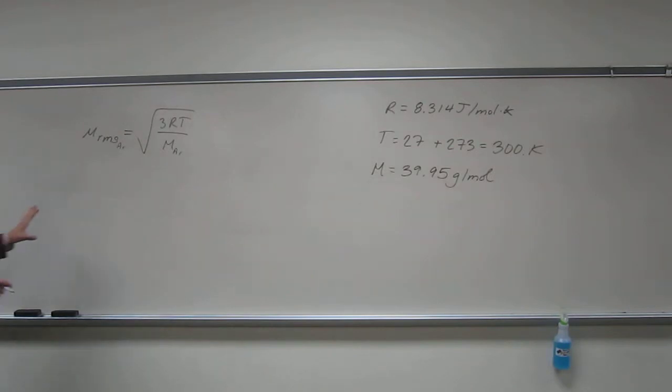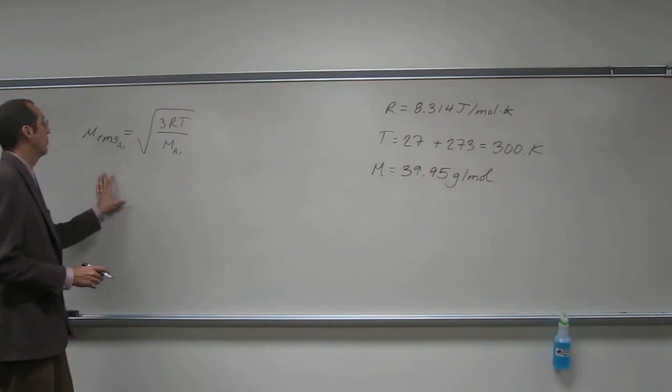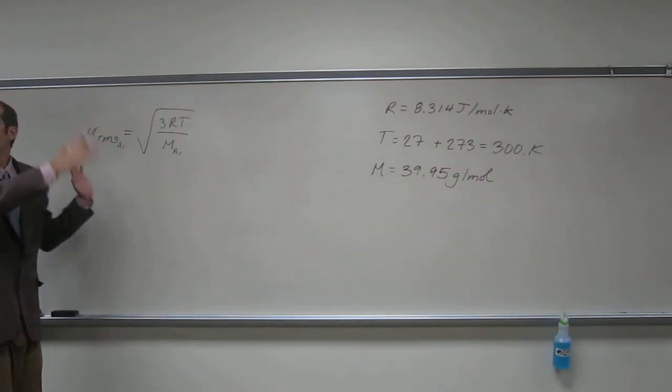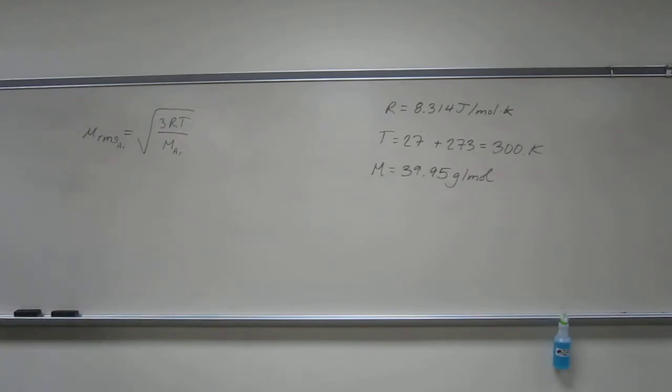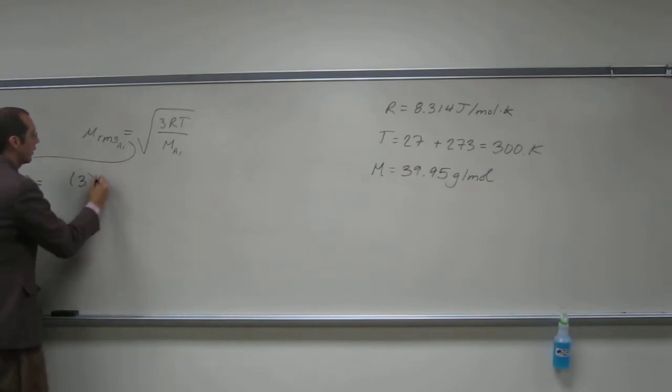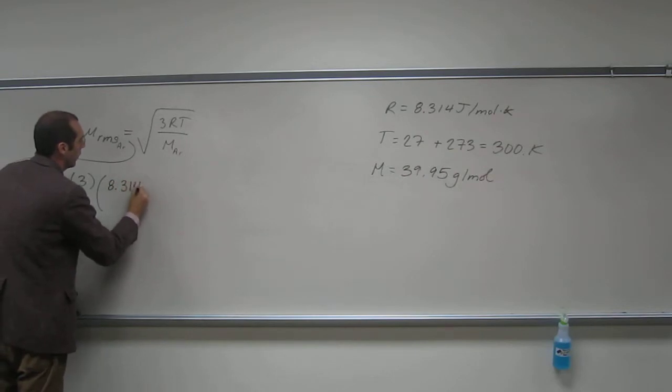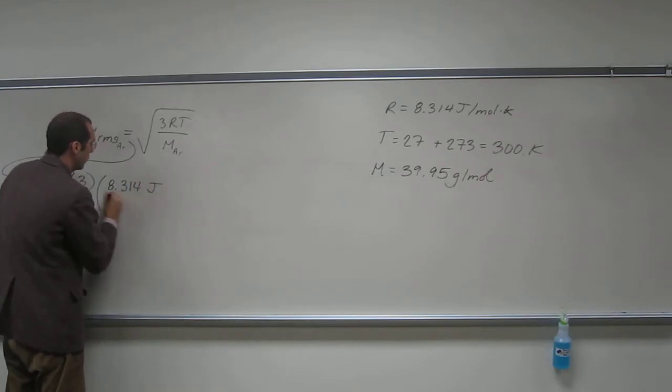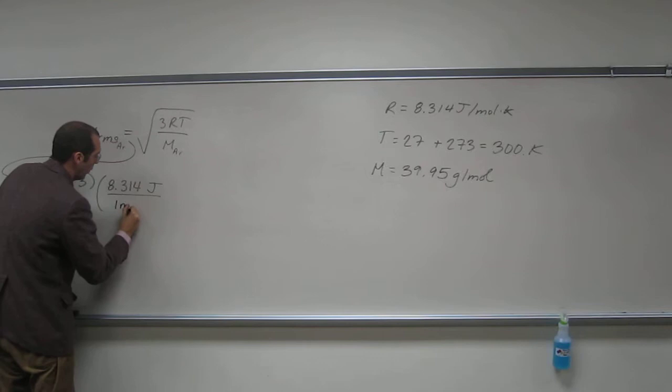So let's go ahead and expand this out and cancel our units out, just so we're making sure we're understanding what's going on. So, let's take this over here. Well three, that's easy enough. R is 8.314 joules per one mole kelvin.